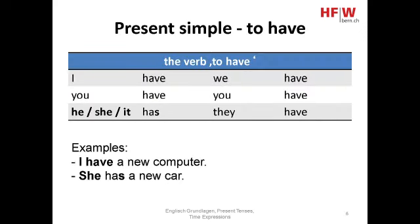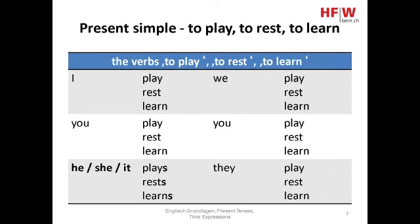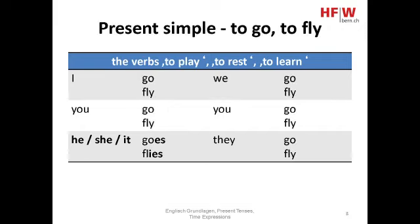We can also use 'to have' in the present simple tense. For example: I have a new computer, she has a new car. There are some more examples you can see on the screen.